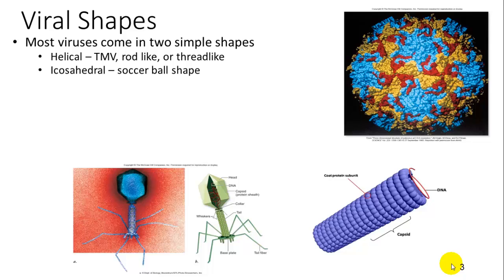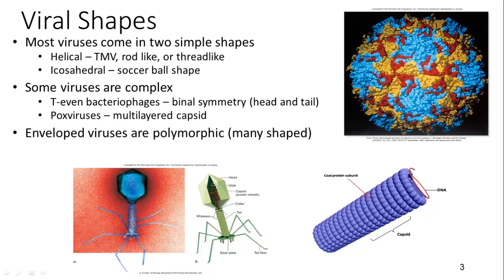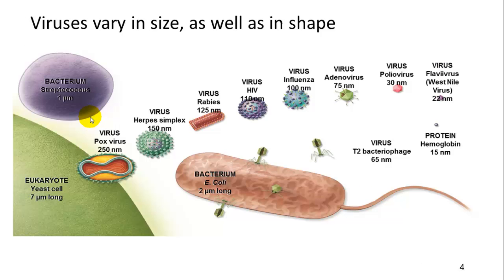But some viruses have more complex shapes, such as bacteriophages, which are shaped like a T. They are binally symmetrical, meaning they have a head and a tail portion. Some viruses are even enveloped and have many different states. Pox viruses are another example of complex morphology, coming in many different shapes with multiple layers within their capsid or protein layer.